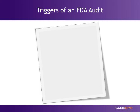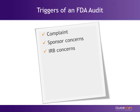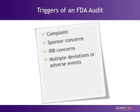A complaint can come from any source, whether it be a study participant, someone on the research staff, or an anonymous source. Regardless of the source, if the FDA hears any rumbling of an issue, it is going to check it out. If a sponsor or the IRB shares a concern about a research site with the FDA, a for-cause audit will occur. Any of these triggers may be related to screening practices, protocol adherence, or anything in between. An audit may also occur if the FDA receives word that the site has had multiple deviations from the protocol, unusual adverse events, or if it has recently been terminated by another sponsor or IRB.